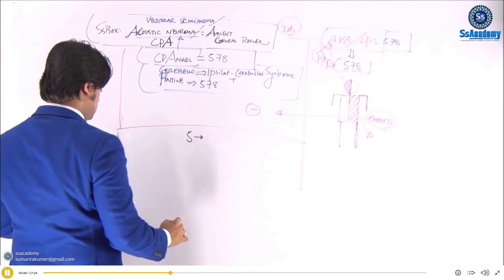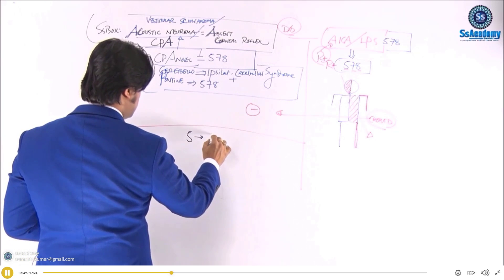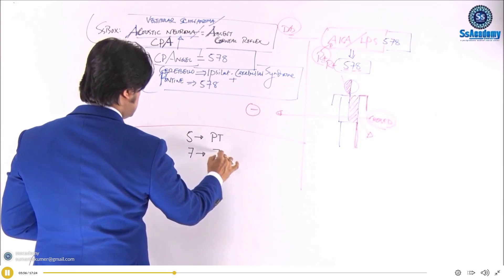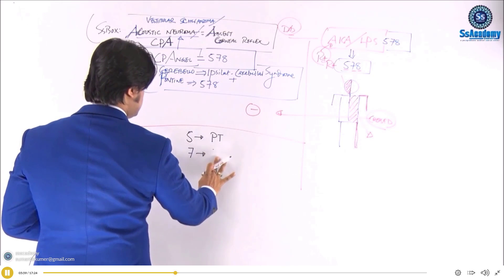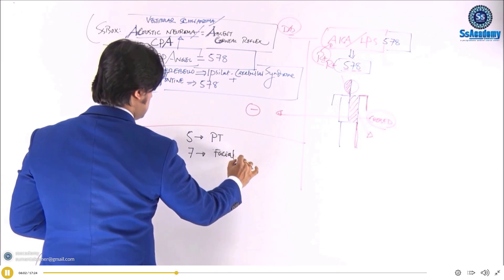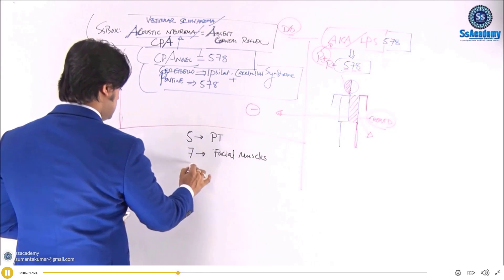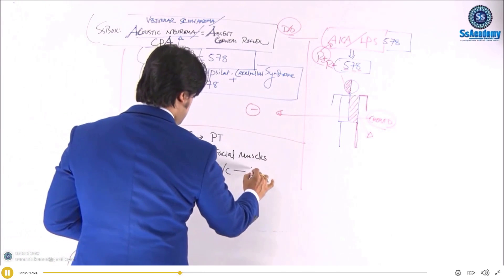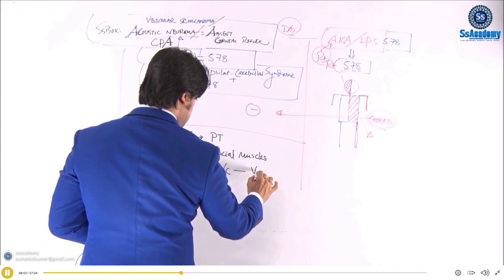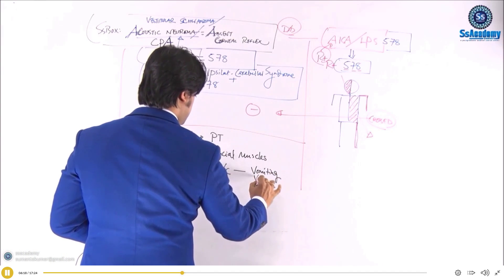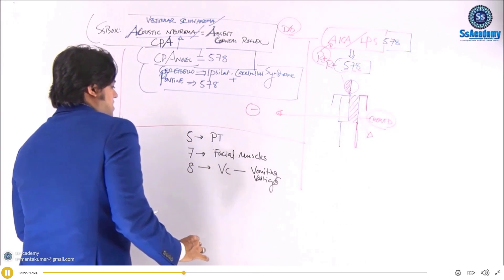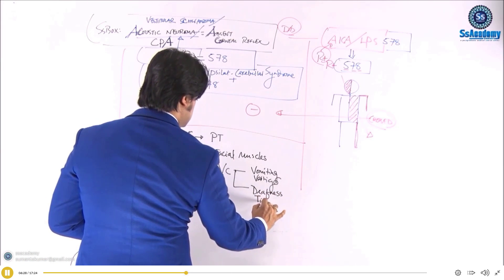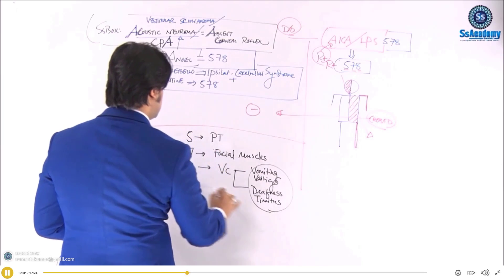Let me discuss 5-7-8 in detail. CN5 means trigeminal nerve — sensory loss of pain and temperature. CN7 means facial muscles will be affected, ipsilateral. CN8 means vestibulocochlear — V for vertigo, V for vomiting, and of course there will be deafness and tinnitus. This is the bundle of 5-7-8.